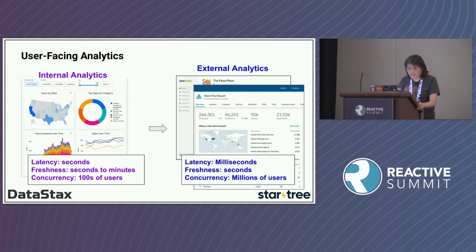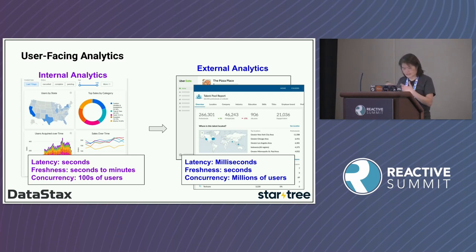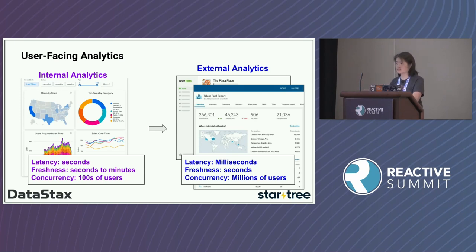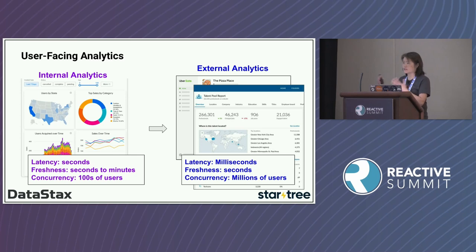Let's look further at user-facing analytics. On the left is internal analytics: you can tolerate up to seconds of latency, freshness of seconds to minutes, and maybe hundreds of concurrent users. But for external analytics — customer-facing — you want millisecond latency, data freshness in seconds, and you don't know how many people will come to your site, so concurrency has to handle thousands. External analytics must be very robust.